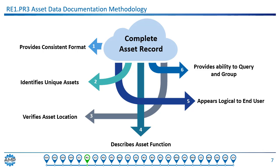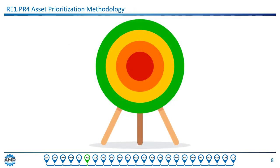These rules can be adjusted to make sense for the business by including more or less information, as long as the criteria are all satisfied: consistent format, identifies unique assets, verifies asset location, describes asset function, and appears logical to the end user — giving us the ability to do that query and grouping. In order to properly focus asset management resources on what is important to the business, we first have to define categories that are important to the business, then decide the performance criteria within each category, and then classify assets based on that criteria.